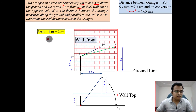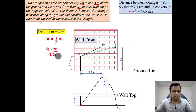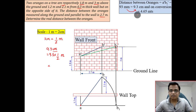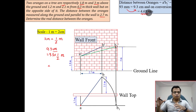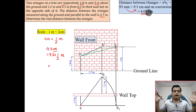So the true length is 9.3 centimeters. Converting using the scale — 1 centimeter equals half a meter — we get 9.3 multiplied by 0.5, which equals 4.65 meters. So the actual distance between the two oranges is 4.65 meters. That was all for today — I'll see you again in the next video, thanks for watching.